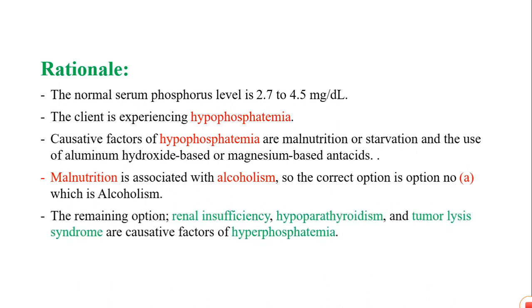The remaining options — renal insufficiency, hyperparathyroidism, and tumor lysis syndrome — are actually causative factors of hyperphosphatemia, not hypophosphatemia, so they are incorrect.